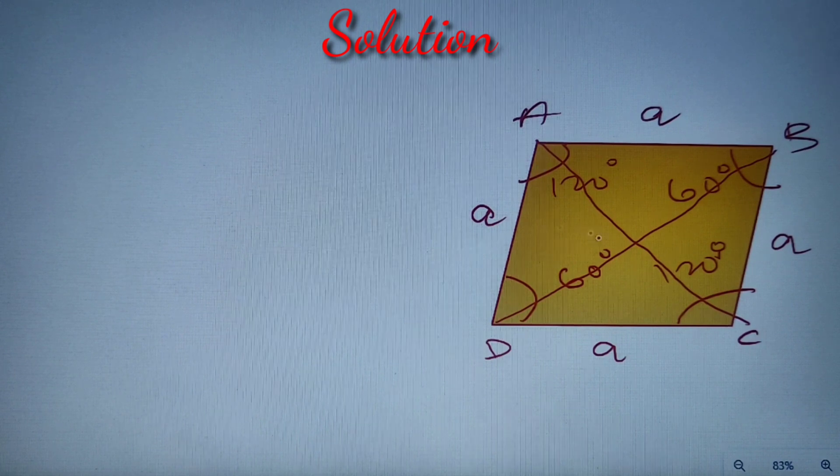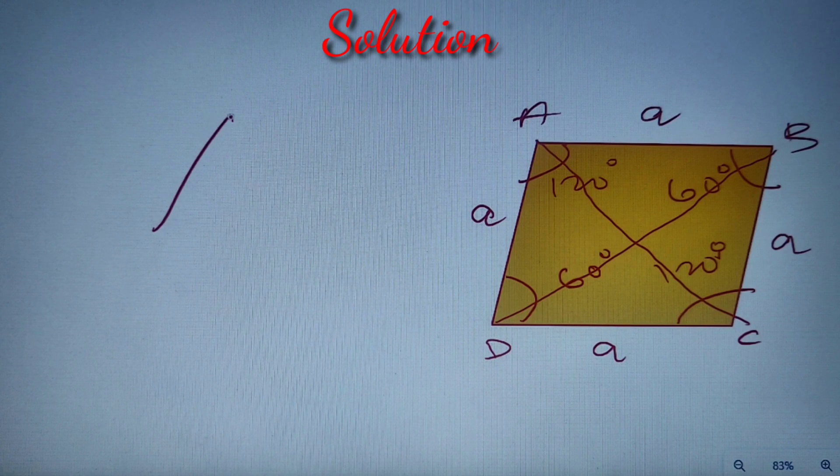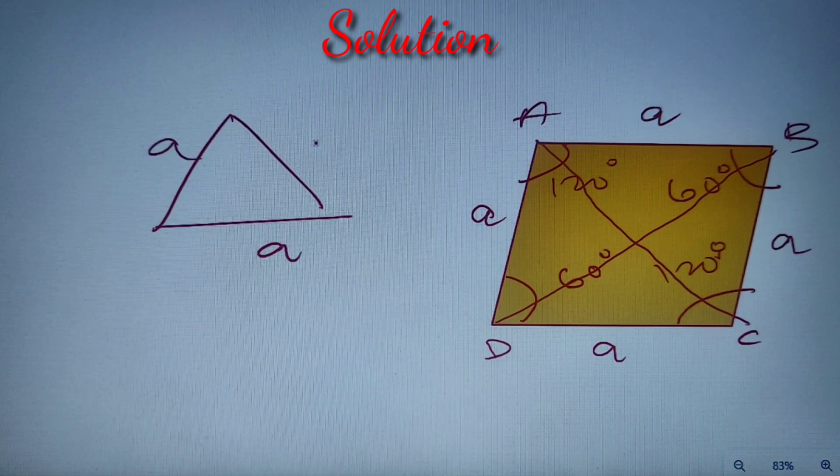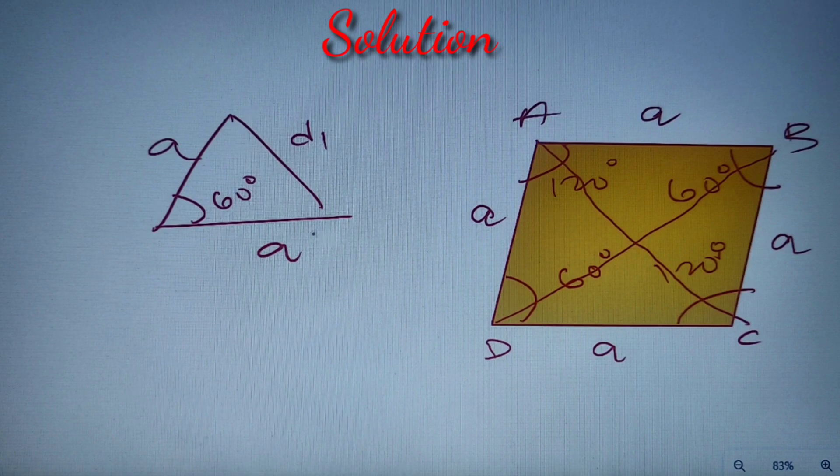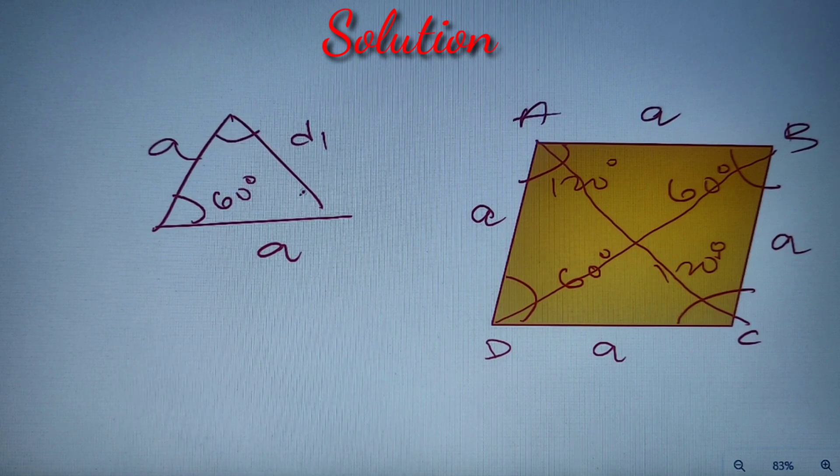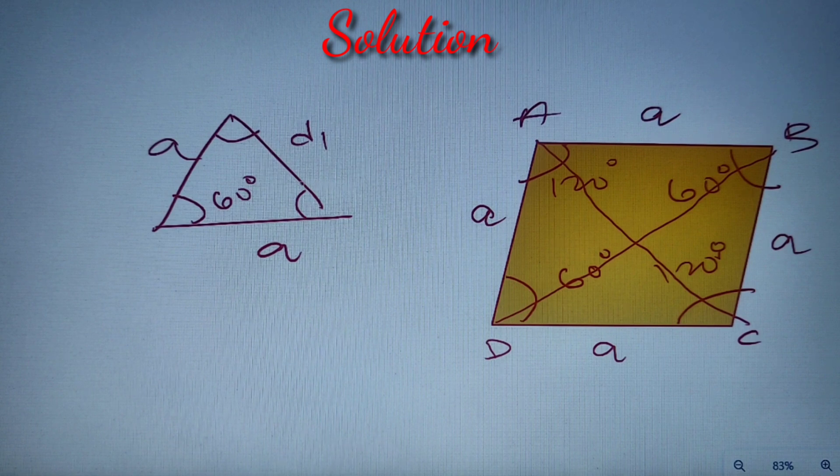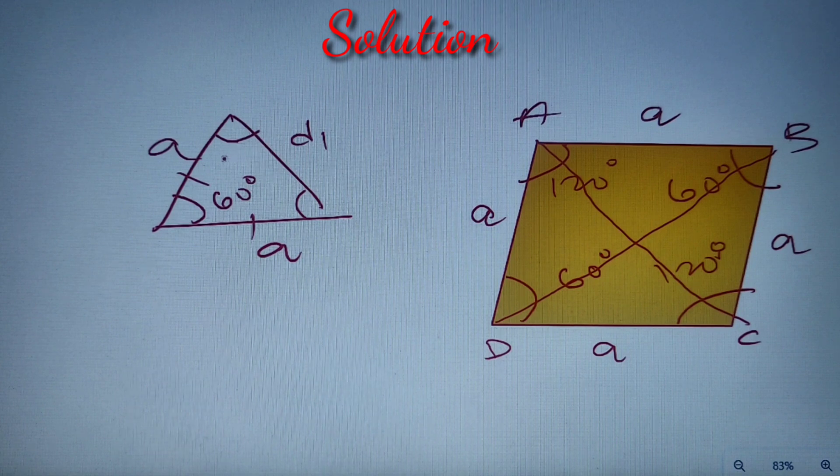Let's take a good look at the triangle ADC. Now we see that ADC is formed by this side as a, this side as a, and a diagonal, so we can take this diagonal as D1. Now if this is equal to 60 degrees and we know that the sum of angles of a triangle is equal to 180 degrees, then this angle plus this angle is equal to 120. Now since this side is equal to this side, these two angles must be same, so 120 by 2 is equal to 60 degrees.